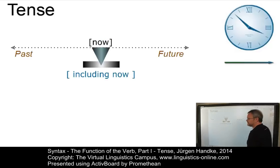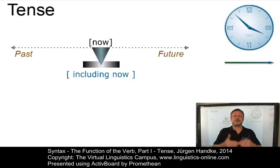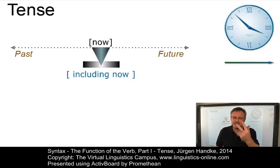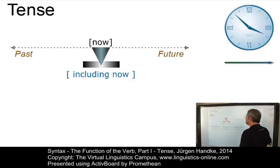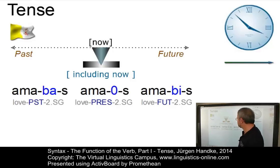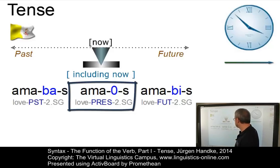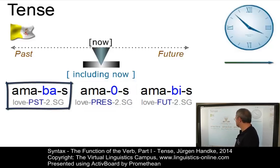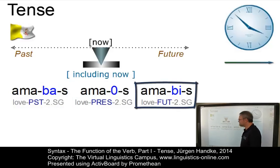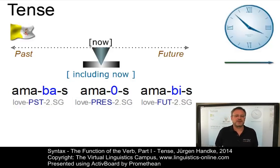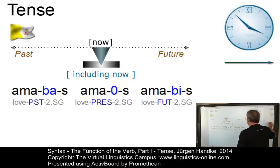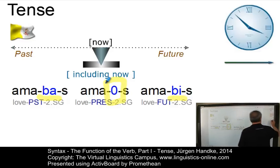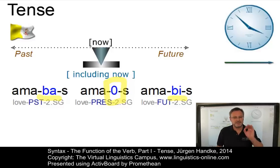Let us now look at tense. As we already said, tense is the grammatical realization of time by means of verbal inflection. Thus, a language can theoretically have up to three tenses. Let's take Latin as an example. Latin has three tenses: the present tense, 'amas' (you love); the past tense, 'amabas' (you loved); and the future tense, 'amabis' (you will love). For each tense we have a well-defined morpheme — 'ba-' for the past tense, 'bi-' for the future tense, and a zero marker for the present tense. Thus, Latin has one specific tense for each time category.